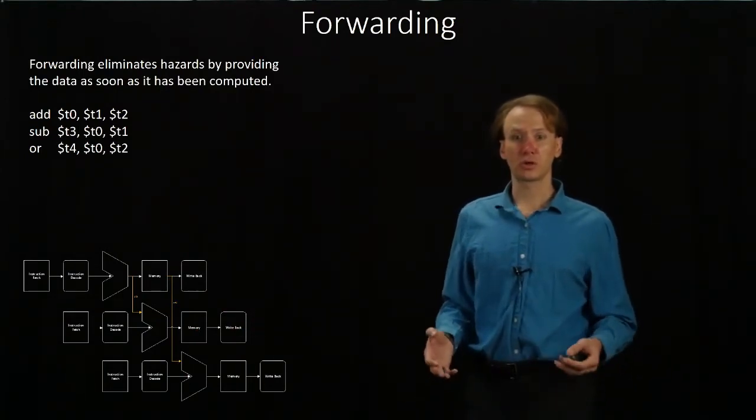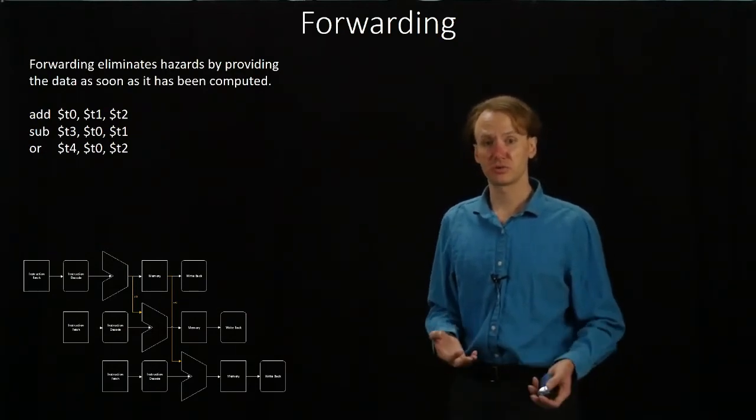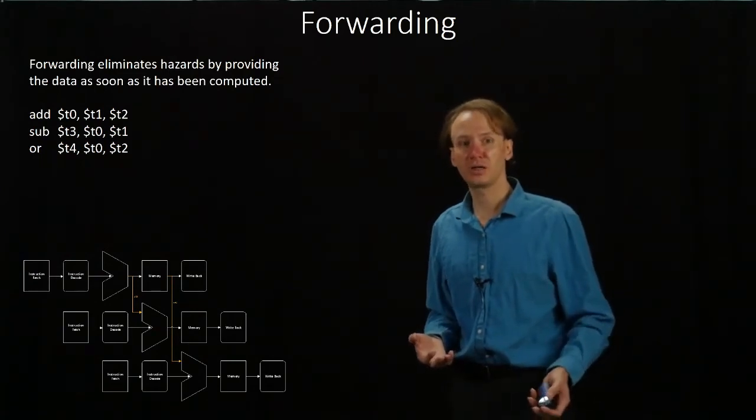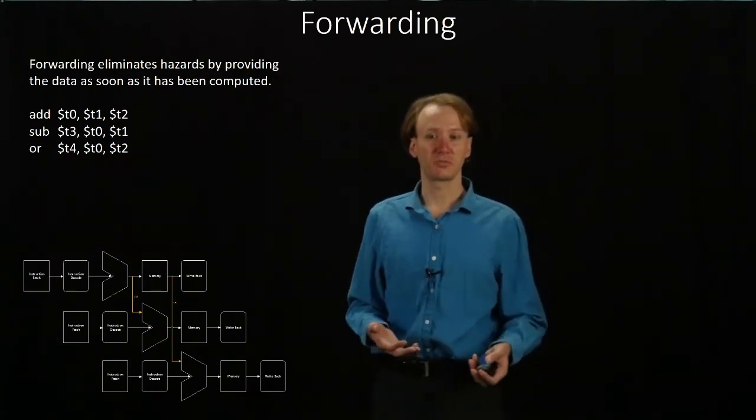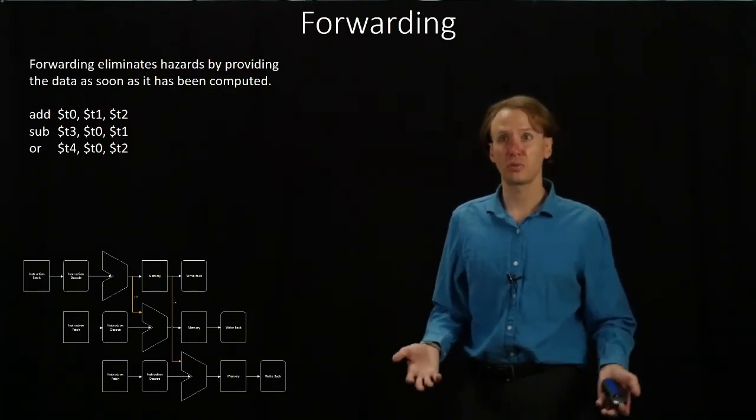In general, forwarding will work really well when we have lots of arithmetic instructions in a row. All of these instructions compute their results relatively early in the pipeline, and we can just pass the results from the end of the execute stage back to the beginning of the next execute stage. So it works really well for these.